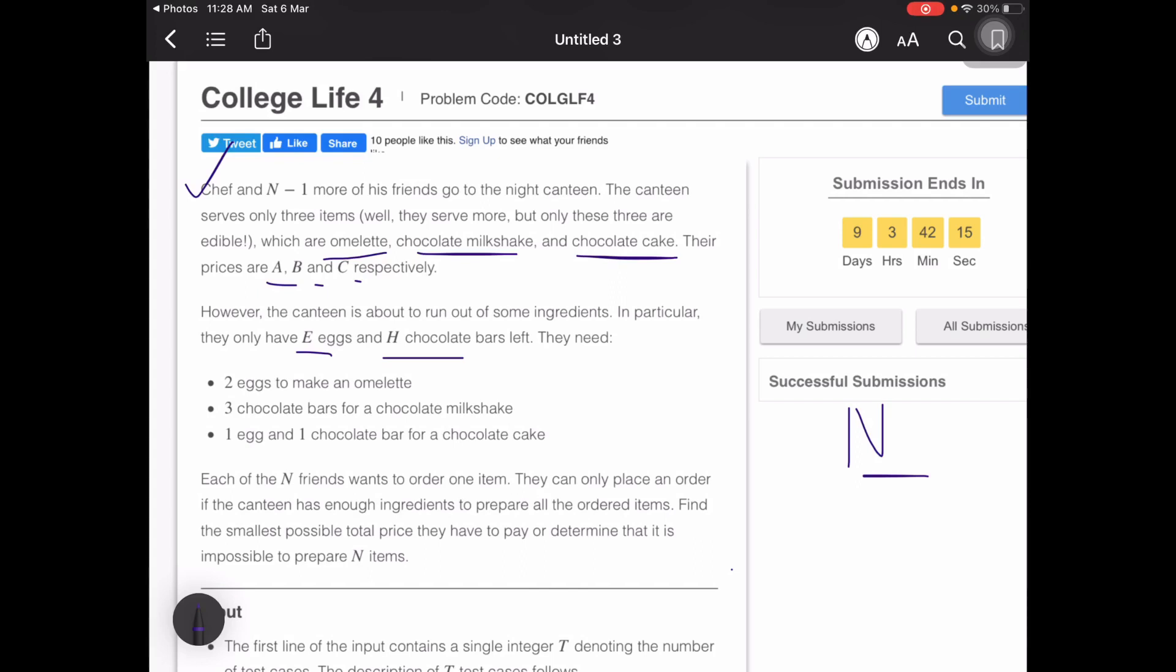These are the conditions: it requires 2 eggs to make an omelet, 3 chocolate bars for a chocolate milkshake, 1 egg and 1 chocolate bar for a chocolate cake. E and H are the remaining eggs and chocolates that the canteen has.